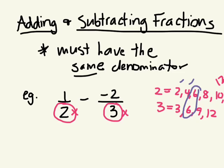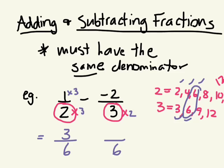So 2 times 3 is 6, right? We're putting 6 as the denominator for both. If I multiply the denominator by 3, whatever you do with the denominator you have to do with the numerator. So 1 times 3 is 3. And for the other fraction, you multiply the top by 2. But watch the sign — it's actually a negative 2 times 2. A negative and a positive gives a negative, so it's going to be negative 4.